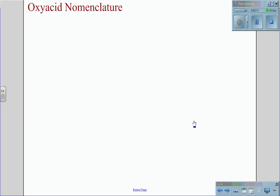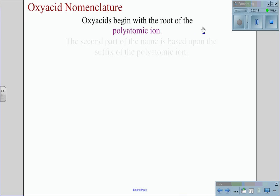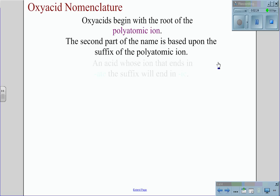For oxyacids, nomenclature follows the basic rules. First, oxyacids will get their root from their polyatomic ion. The second part of the name is based upon the suffix of that polyatomic ion.